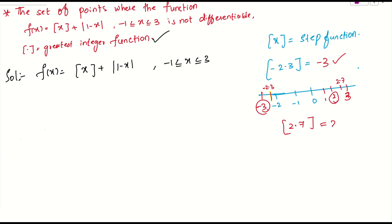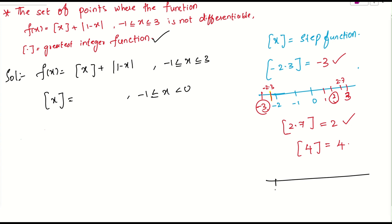For an integer, the greatest integer function gives the same value. The greatest integer function is discontinuous at integers — that's why it's called the step function. On the number line, for any value between -1 and 0, box(x) = -1.